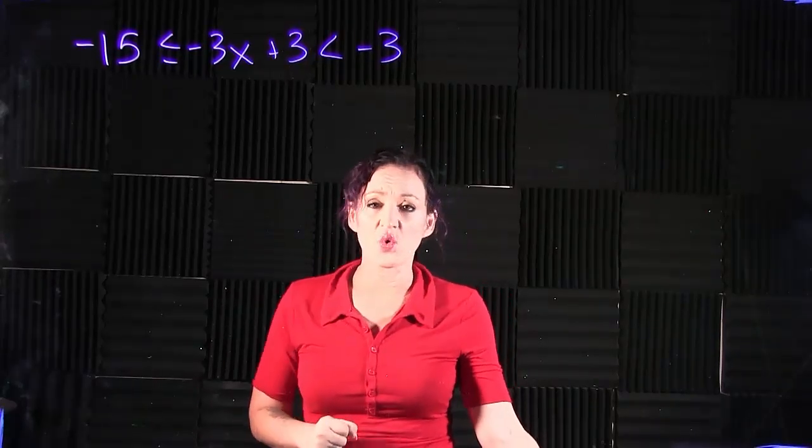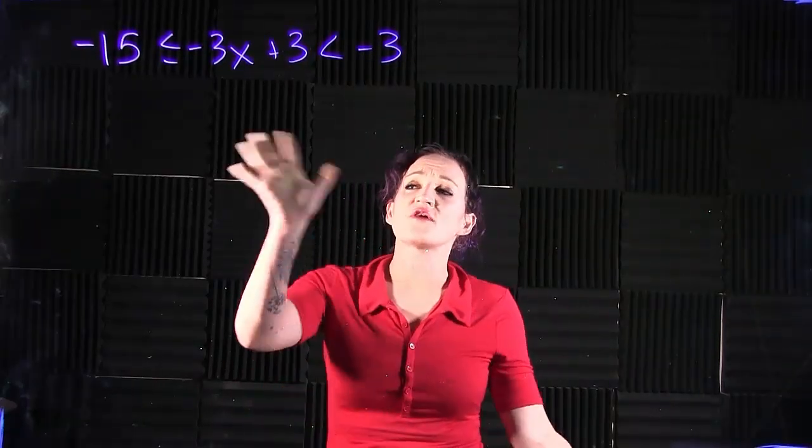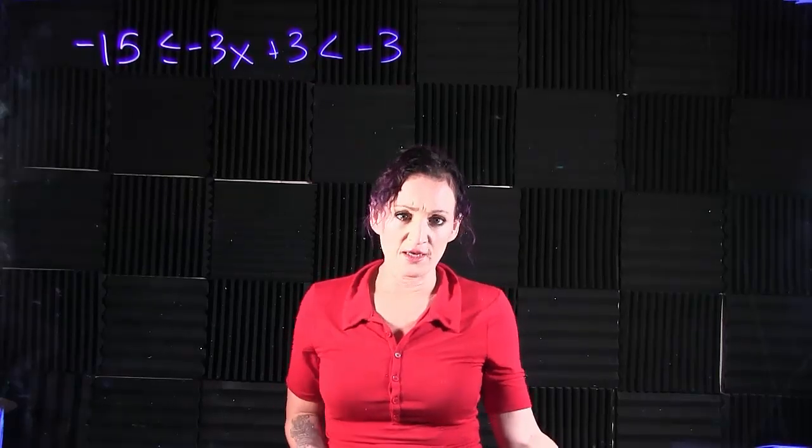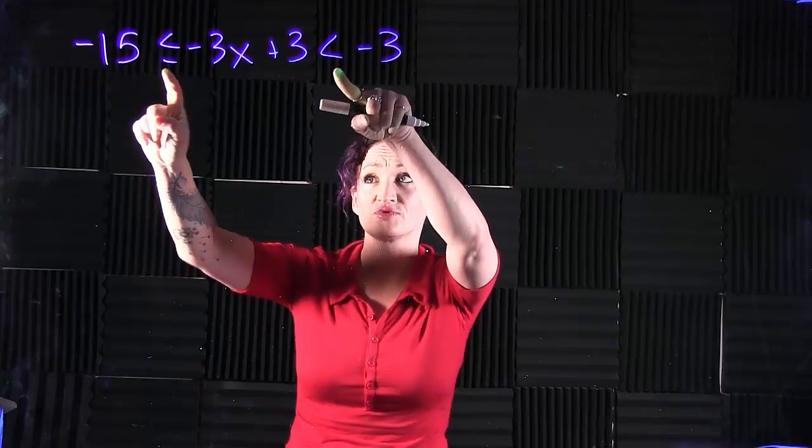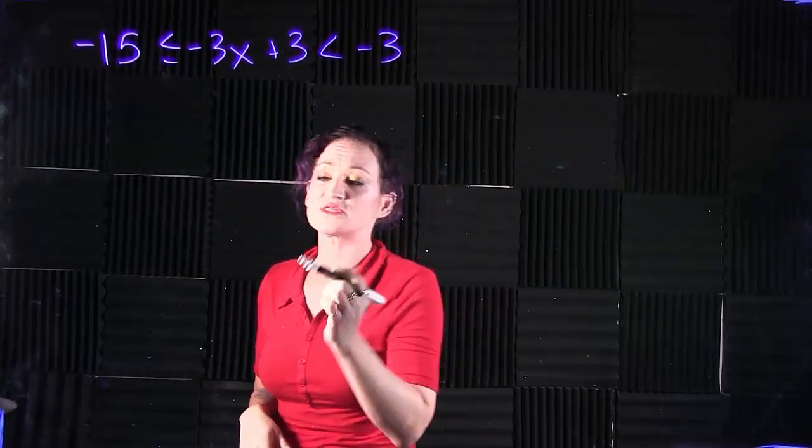Let's solve the following compound inequality. The main thing in solving a compound inequality as opposed to a regular inequality is we have two inequality symbols here, which create three sections in our problem: the left, the middle, and the right.